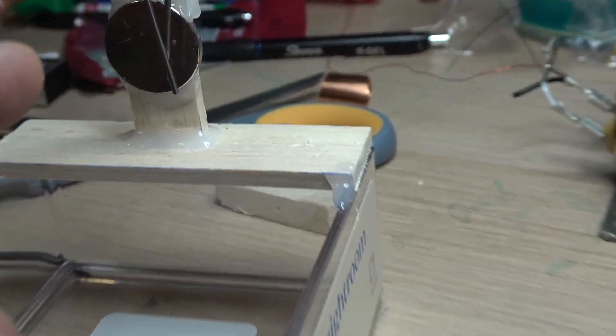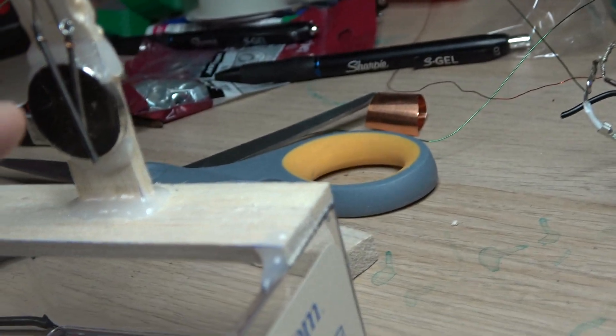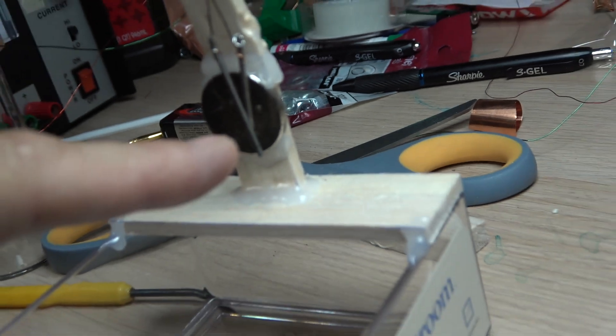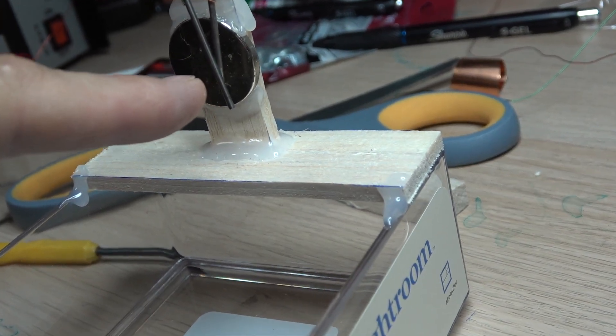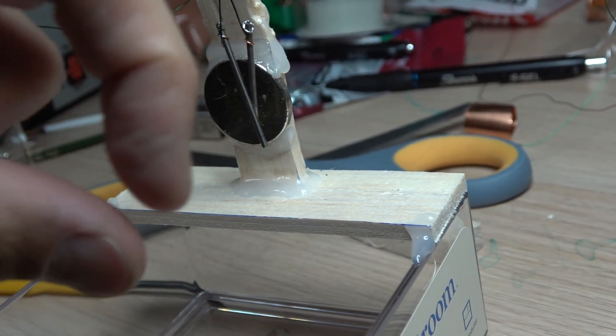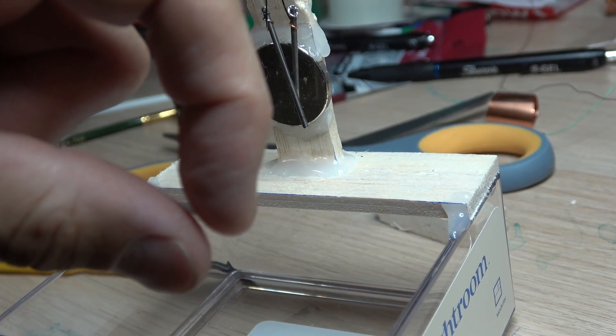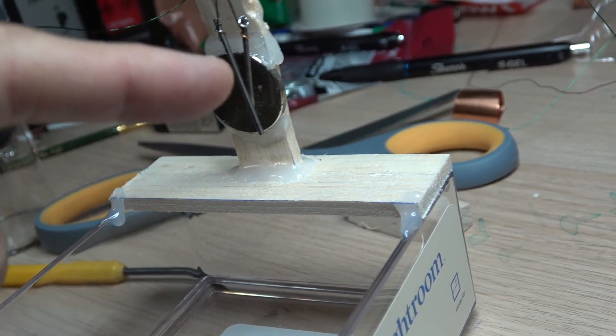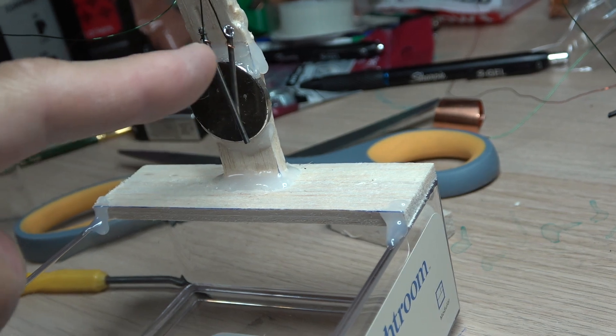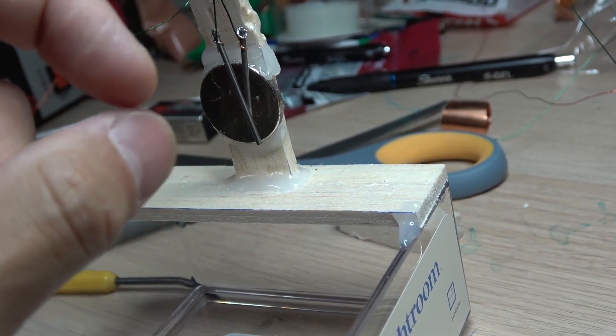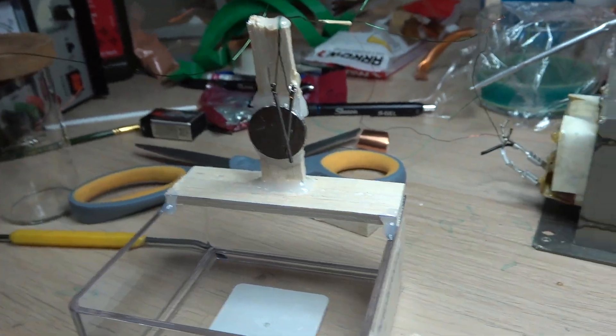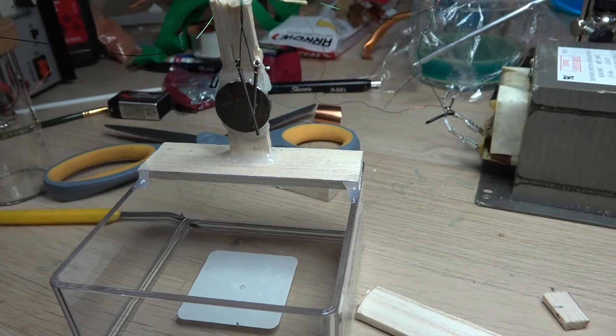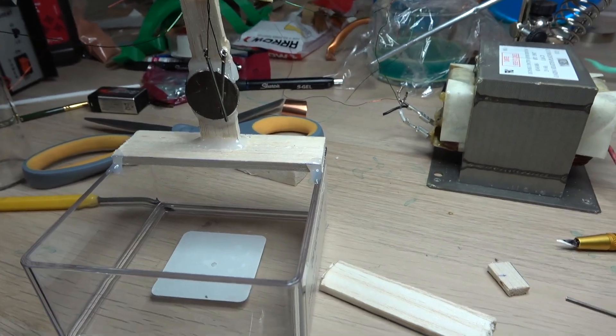Once it breaks the arc, it instantly very quickly forms again at the bottom where the two tungsten rods are closer together. And then the same thing repeats. It gets pushed up again by the magnetic vortex and then breaks at the top and then forms again, just like a Jacob's ladder. I actually kind of stumbled across this accidentally.